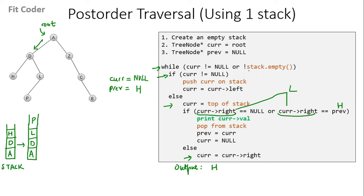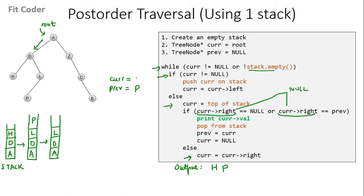In the next iteration, stack is not empty, so we come in the else part. `Current` becomes equal to top of stack, which is P. Right of P is null, so this if condition is true. We print the value of `current`, which is P. We pop from the stack. We set `previous` equal to `current`, and `current` equal to null. In the next iteration, stack is not empty, so we again come in the else part. `Current` becomes equal to top of stack, which is L. Right of L is null, so this if condition is true. We print the value of `current`. We pop from the stack. We set `previous` equal to `current` — so `previous` is L — and `current` equal to null.